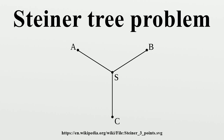The Steiner ratio is the supremum of the ratio of the total length of the minimum spanning tree to the minimum Steiner tree for a set of points in the Euclidean plane. In the Euclidean Steiner tree problem, the Steiner ratio is conjectured to be √3/2. Despite earlier claims of a proof, the conjecture is still open. In the rectilinear Steiner tree problem, the Steiner ratio is 2/3.